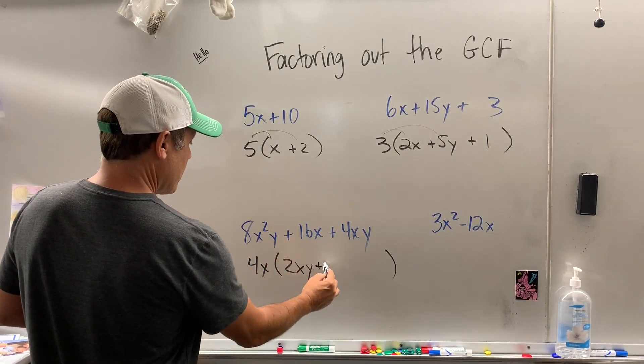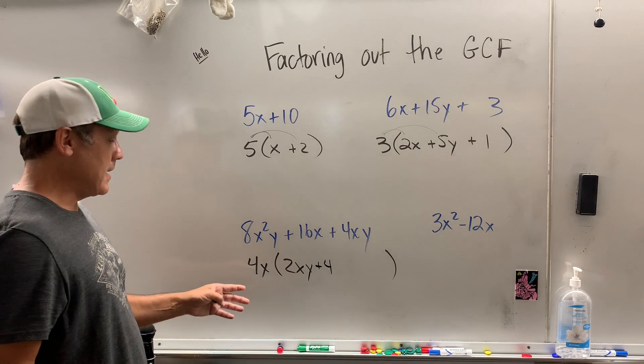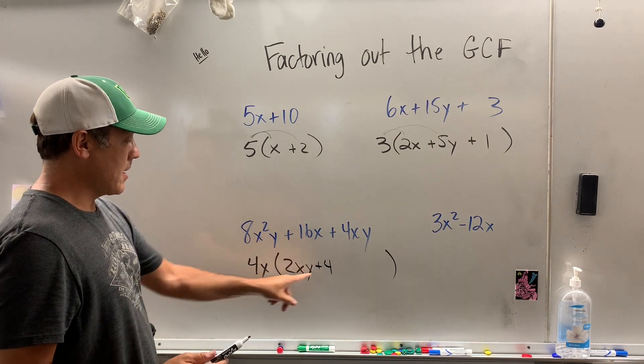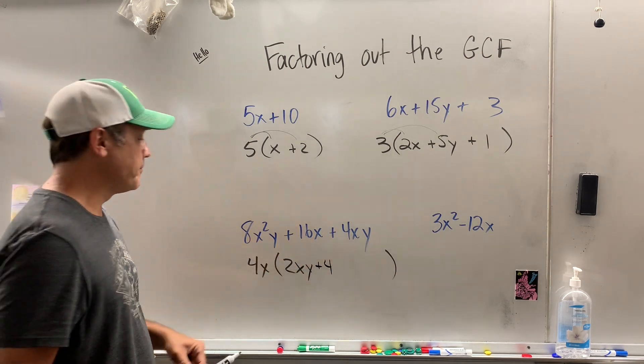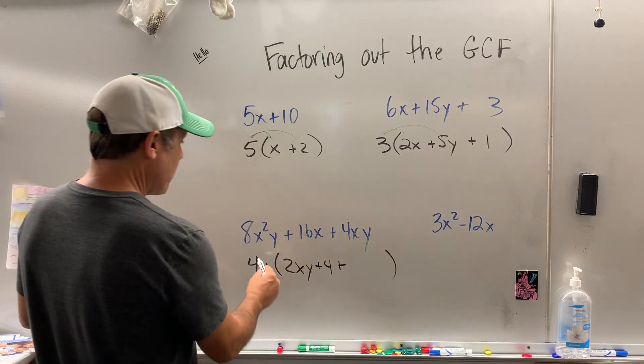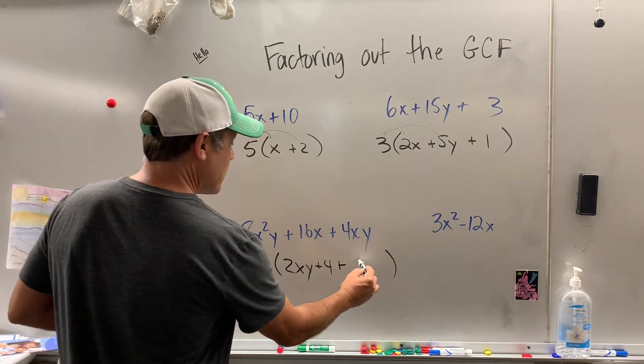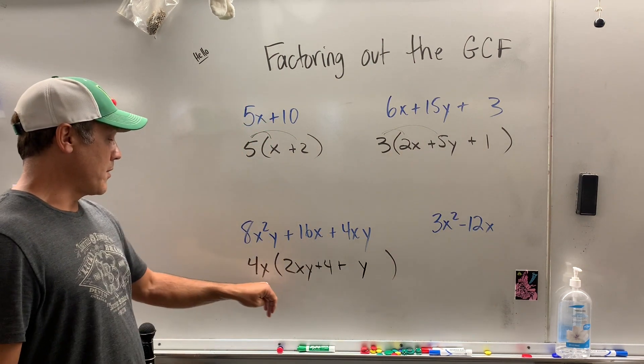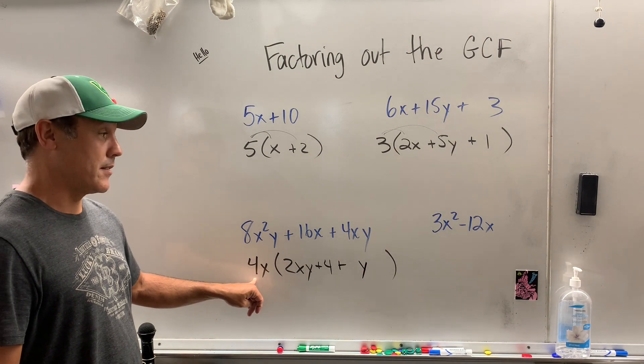How about over here? Plus 4. That's all we need because 4x times 4 is 16x. What's missing here? We've got the 4, we've got the x. All that's missing is the y. So we pulled out the greatest common factor there.